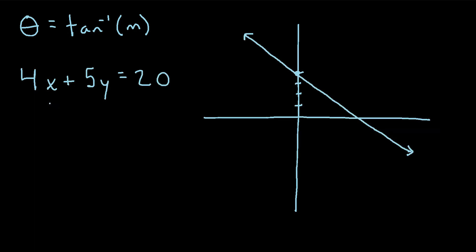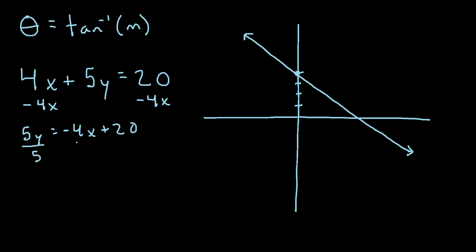Let's try one more example. We're given the equation 4x plus 5y equals 20, and we're told to find the angle of inclination. It helps to get it in y equals mx plus b format. To get y by itself, we subtract 4x from each side, leaving 5y equals negative 4x plus 20. Then we divide every term by 5, giving us y equals negative 4/5 x plus 4.